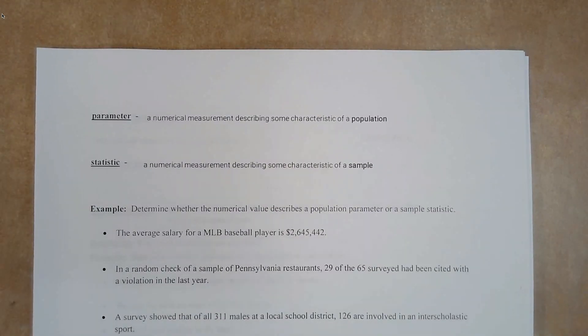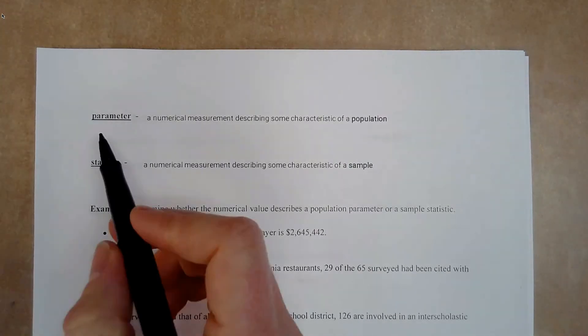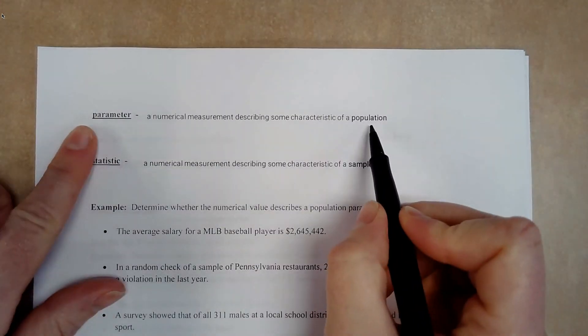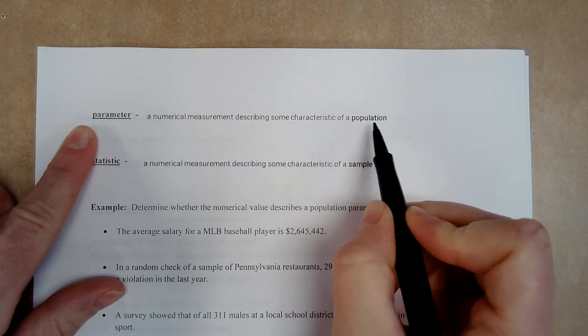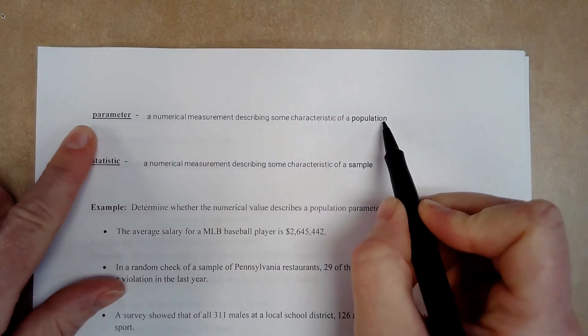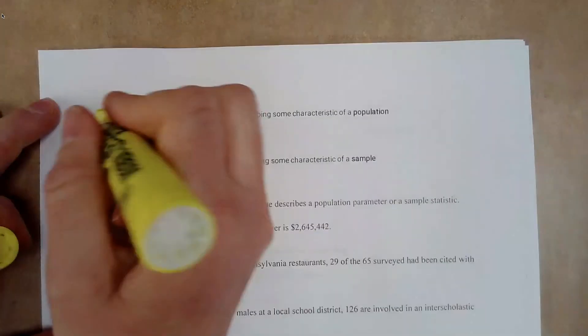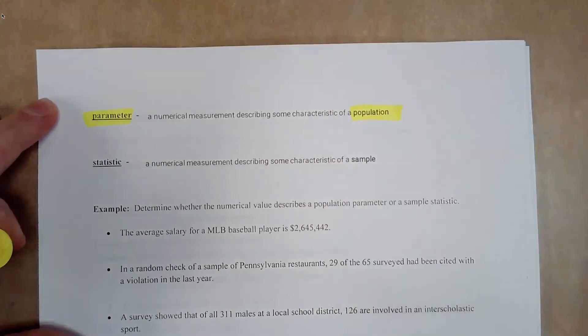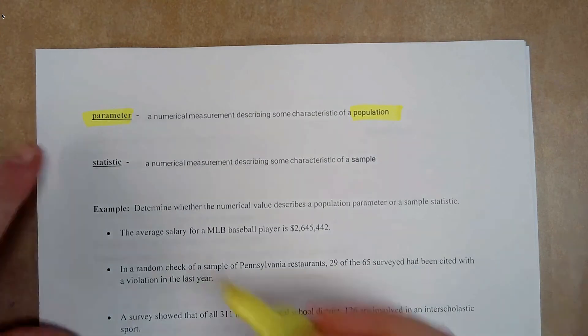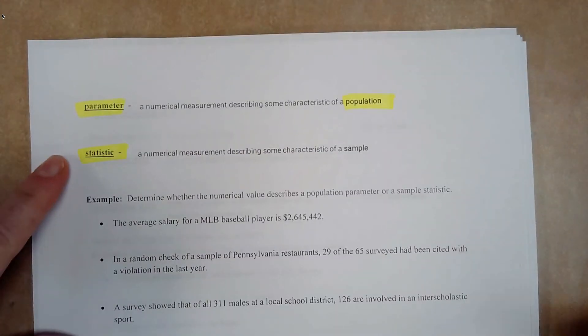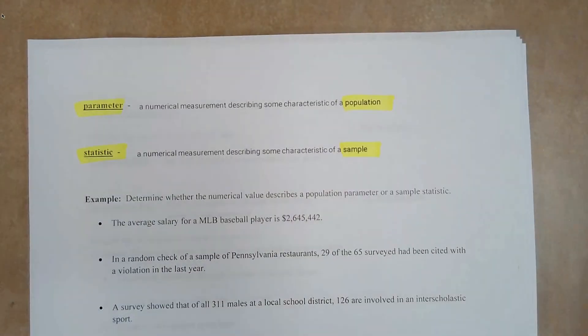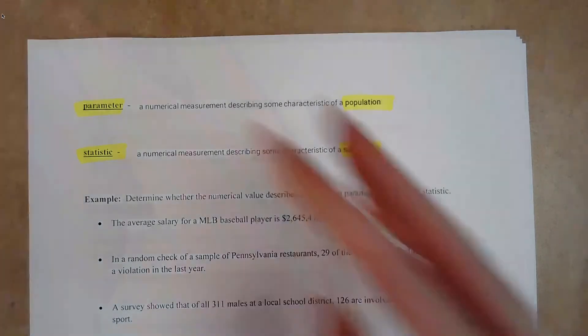Parameter. So we are going to be finding a lot of information from our population and from our statistic. So a population comes from, our parameter, sorry, comes from the population. So a numerical measurement describing some characteristics of a population. So parameter, population.